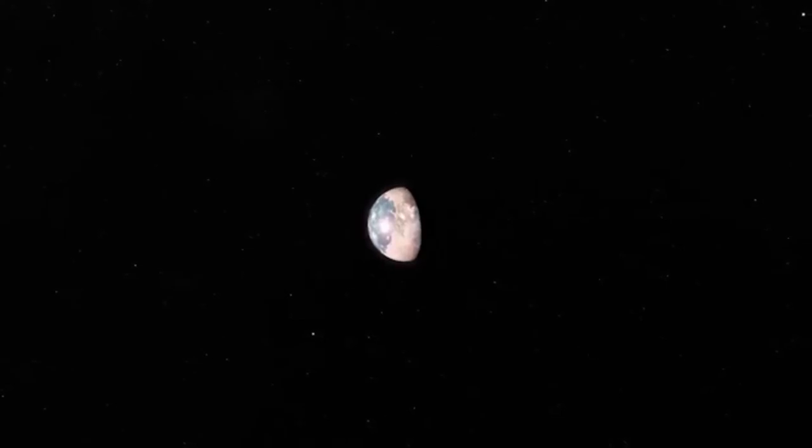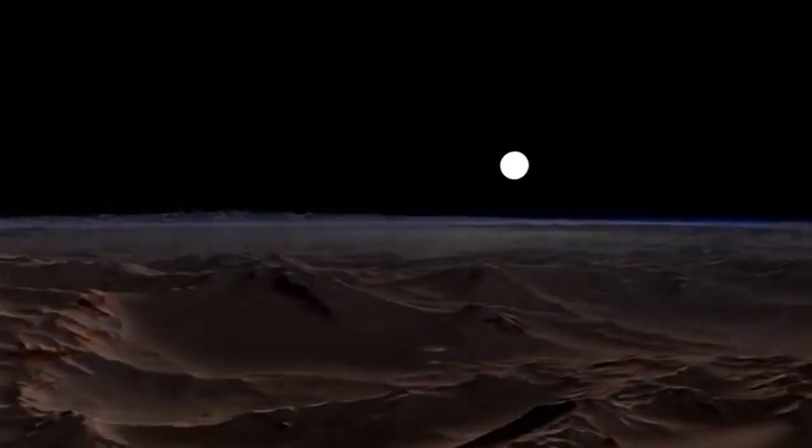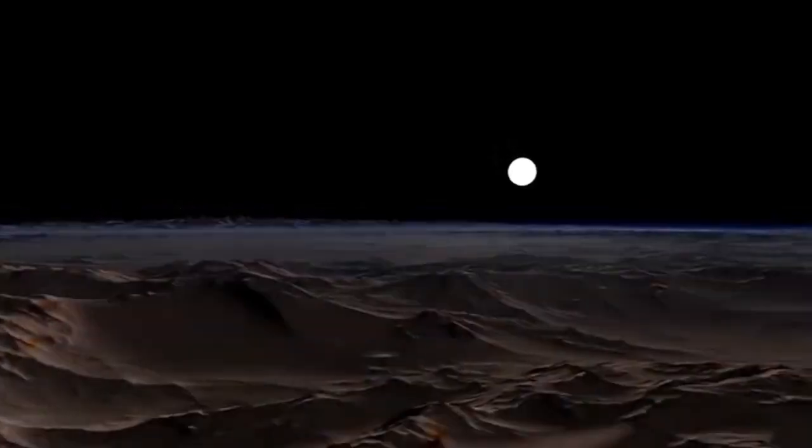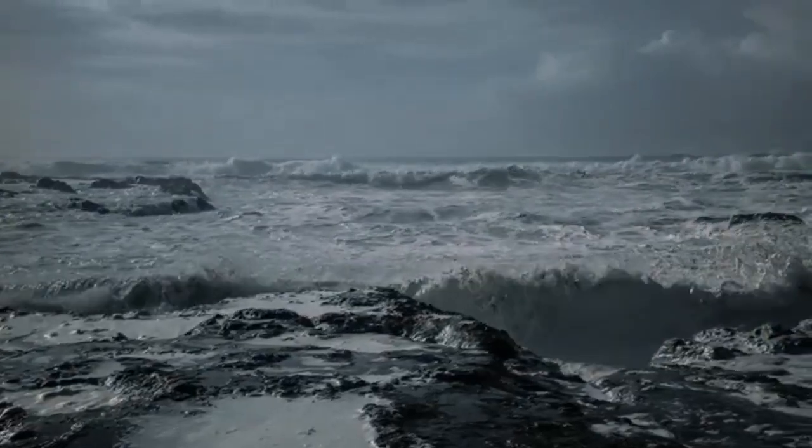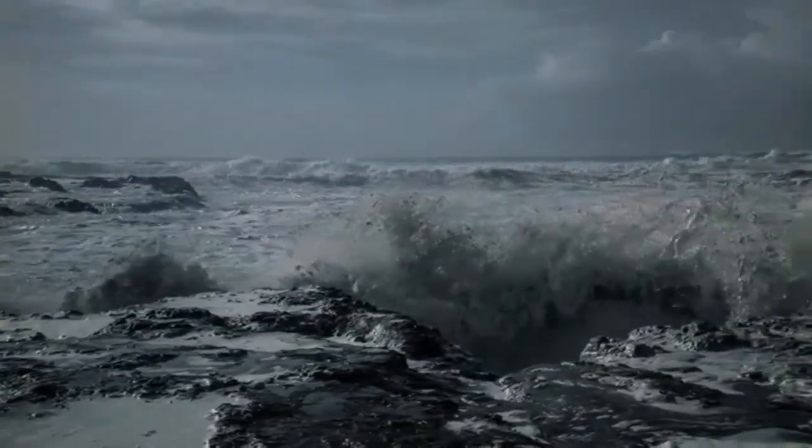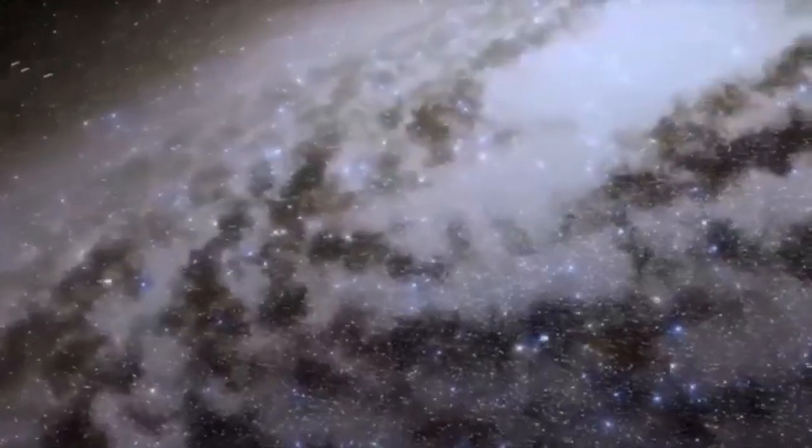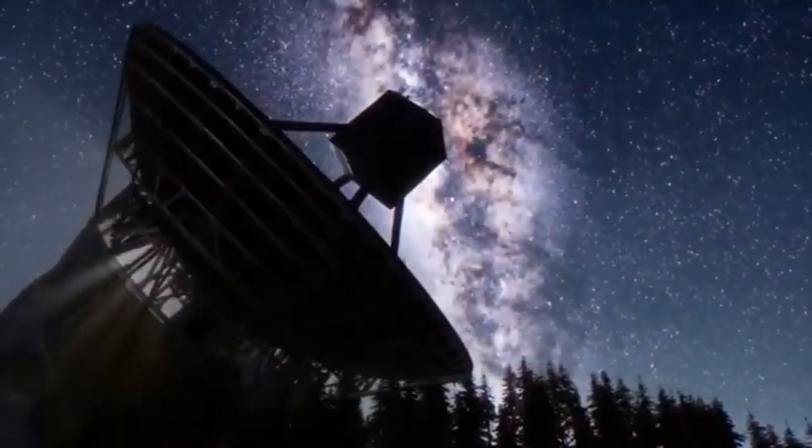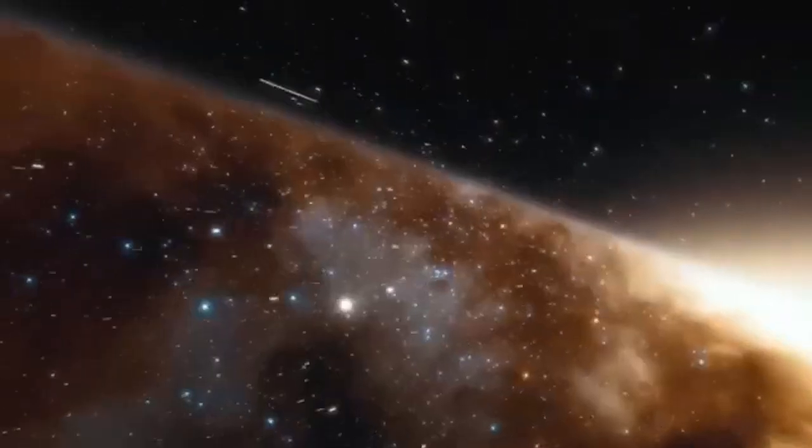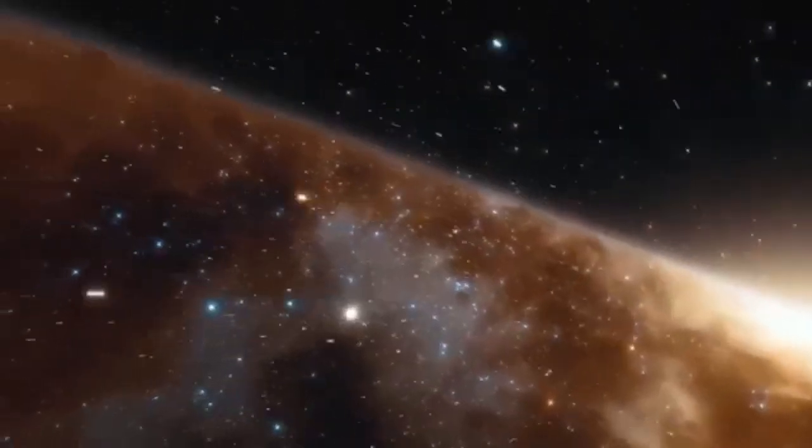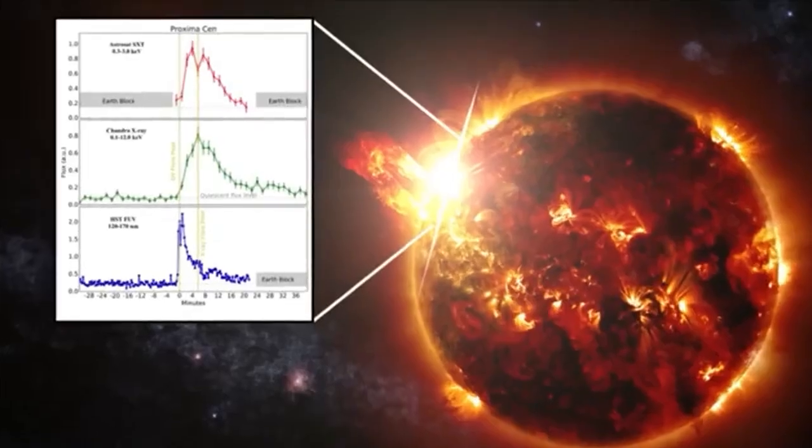Following its successful exploration of Jupiter and Saturn, Voyager 1 continued its trajectory towards the outer reaches of our solar system. In 1990, from its unique vantage point beyond Neptune, Voyager 1 captured the famous Pale Blue Dot image, where Earth appears as a tiny speck in the vastness of space. This poignant image, taken at the request of astronomer Carl Sagan, underscores the fragility and interconnectedness of our planet within the cosmic tapestry.